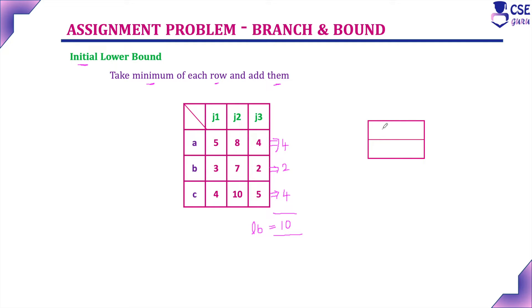The state space tree starts here with the initial lower bound value of 10 at level 0. With this initial stage, we will construct the next level by considering person A — assign the first job to person A and compute the lower bound value, then assign the second job and compute the lower bound value, then assign the third job. Among these three lower bound values, whichever is minimum, that particular job we assign to person A. Then we continue to person B at the next level.